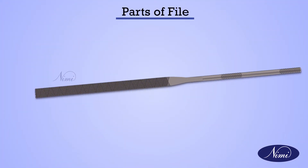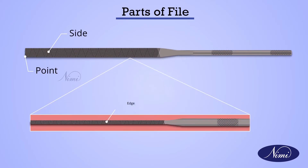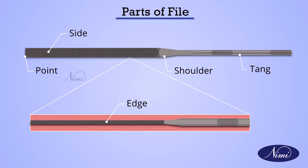These files are mainly used by jewel makers, key makers, watch makers, etcetera. Parts of the file include the side and point, edge, shoulder, and tang — these are the parts of a needle file.